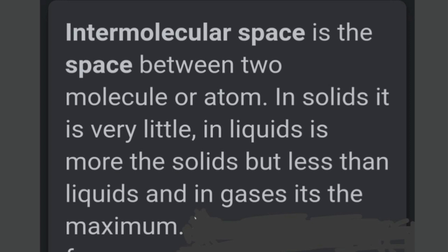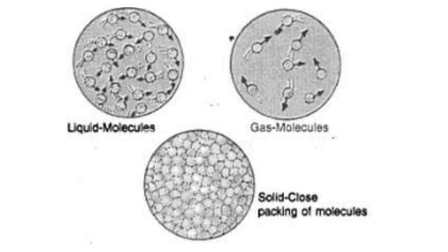A substance can be in any state of matter depending on the intermolecular force and the intermolecular space between its molecules. Now we will see the arrangement of molecules in the three states of matter. First, let's see solids. The intermolecular force is the strongest in solids, as you can see in this picture. So the intermolecular space between the molecules in solids is practically absent and the molecules are closely packed together. The molecules in solids hardly move about — they only vibrate. This tight arrangement of molecules gives solids a definite shape and a definite volume.